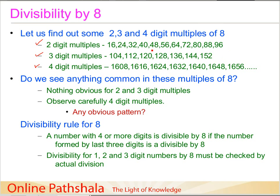Do we see anything common in the multiples of 8? Looking closely: 16, 24, 32, 40, 48, 56 — no pattern is emerging in the two-digit multiples; you have to actually divide them. For the three-digit multiples, looking at the last two digits, there's no clear pattern either. We do see that 4, 12, 20, 28, 36, 44, 52 are multiples of 4, but that doesn't tell us whether the number is divisible by 8.